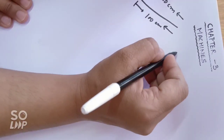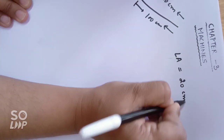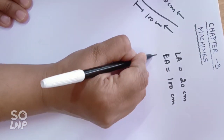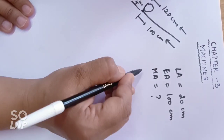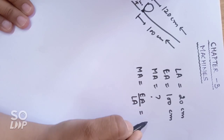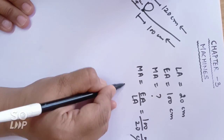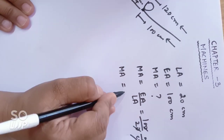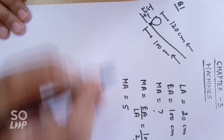Given: load arm is 20 centimeters, effort arm is 100 centimeters. We need to find mechanical advantage. As we have done in our previous lecture, mechanical advantage is given by the ratio of effort arm to load arm. Substituting the values: 100 divided by 20. The centimeters cancel out, so mechanical advantage has no unit. On calculation, the answer comes out to be 5.